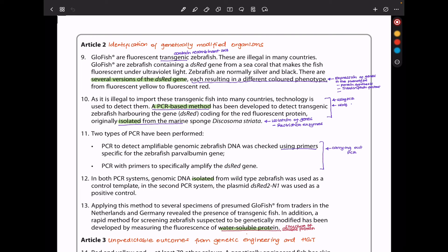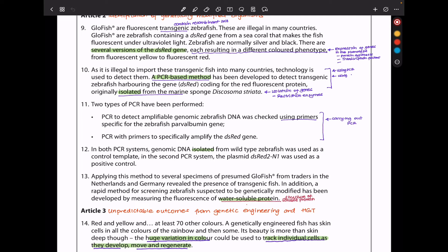As it is illegal to import these transgenic fish into many countries, technology is used to detect them. A PCR-based method has been developed to detect transgenic zebrafish harboring the gene DsRed, encoding for the red fluorescent protein originally isolated from the marine sponge Discosoma striata. Two types of PCR have been performed. PCR to detect amplifiable genomic zebrafish DNA was checked using primers specific for the zebrafish parvalbumin gene. PCR with primers to specifically amplify the DsRed gene.